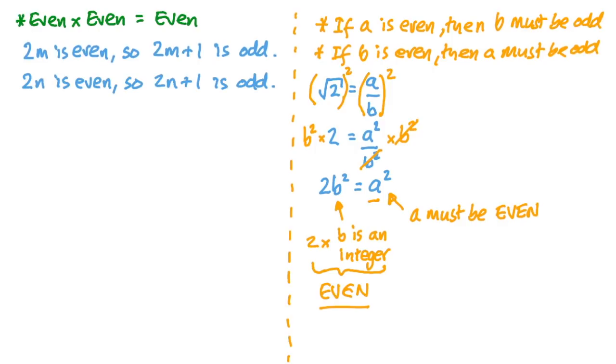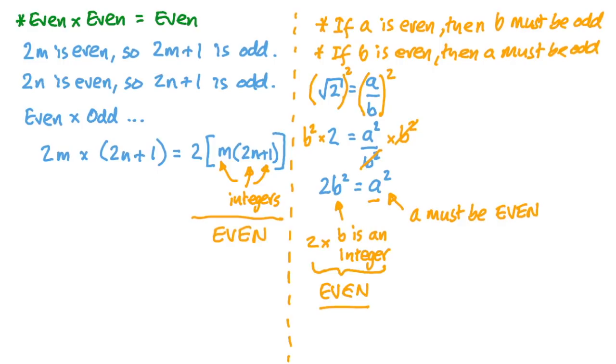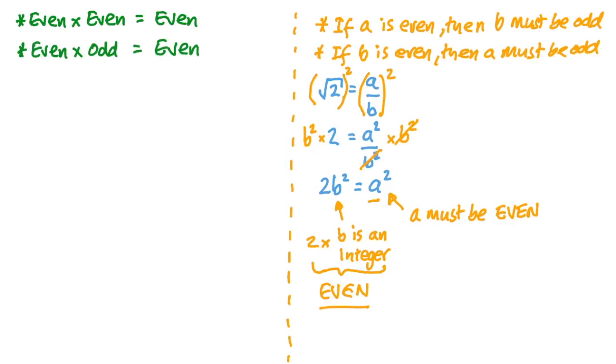So, let's look at other combinations of multiplying odd and even numbers together to see if we can get an even number result. For example, if we wanted to multiply an even number by an odd number, we could do 2m times 2n plus 1. And again, because of associativity, we can write that as 2 times m times 2n plus 1. And again, we've got integers inside the parentheses there, so we've got 2 times an integer. So, even times odd also gives us an even number. And that works the other way around too. If we had an odd number times an even number, we'd also get an even number.